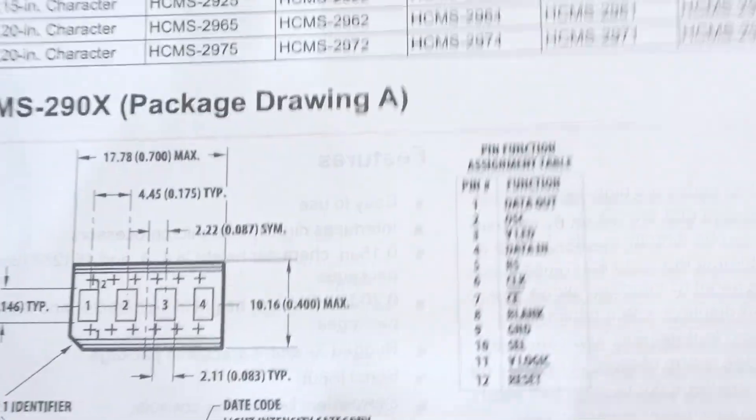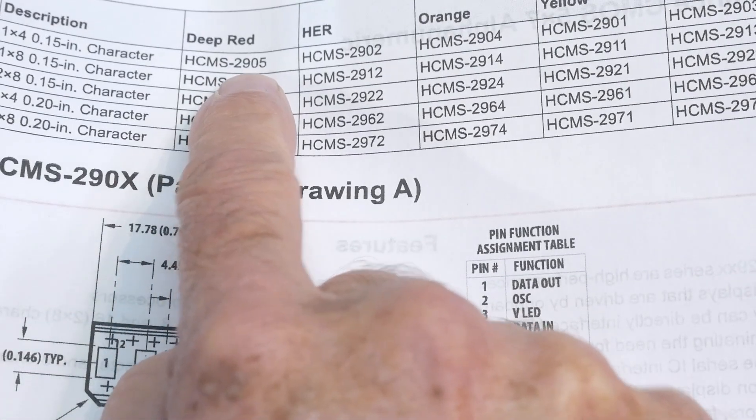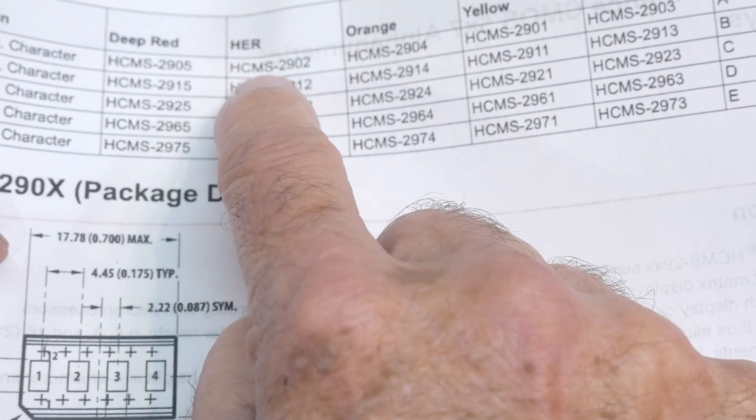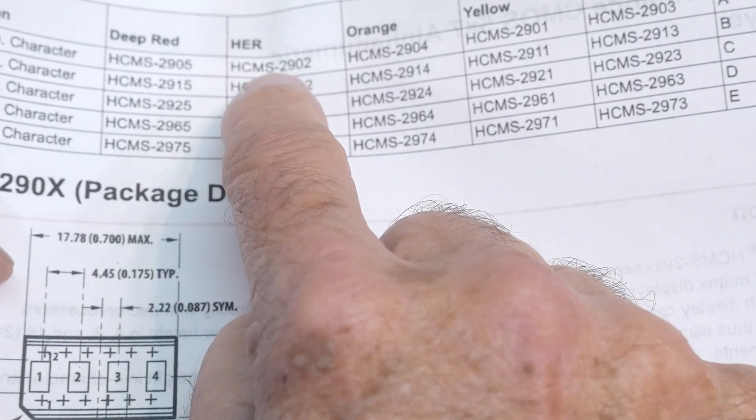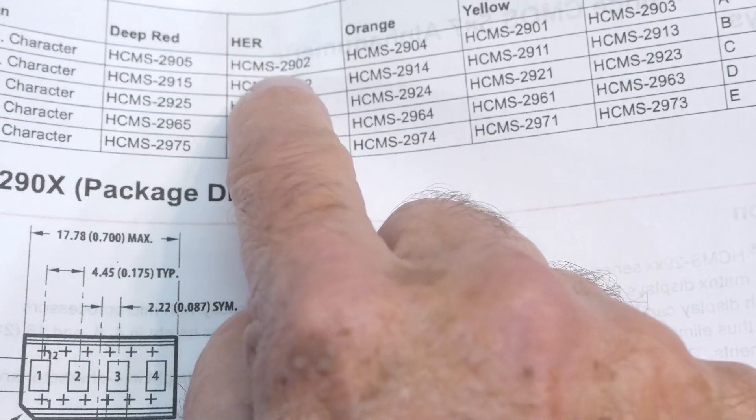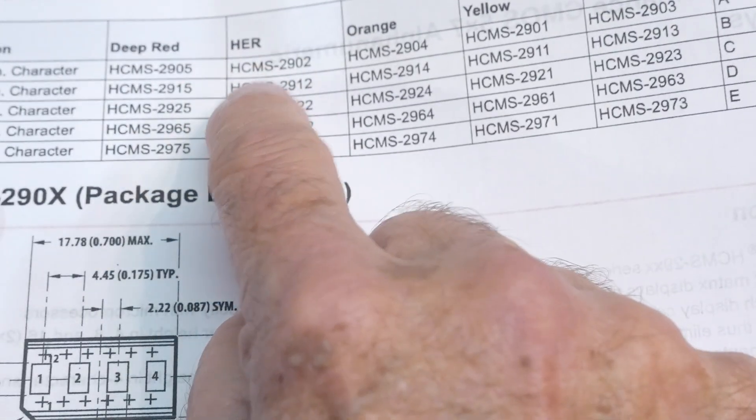We have, in our possession, this little guy here. We have the 2902. We have this one, which is HER. That is the color of the LED. We'll turn it on. And there's a deep red. Then there's a high-efficiency red, which is brighter.